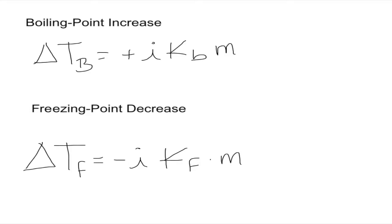For the boiling point increase the formula is ΔTb = positive i × Kb × m, where i is the van 't Hoff factor, Kb is a constant, and m is the molality. For the freezing point decrease it is ΔTf = negative i × Kf × m, and they represent pretty much the same structure.